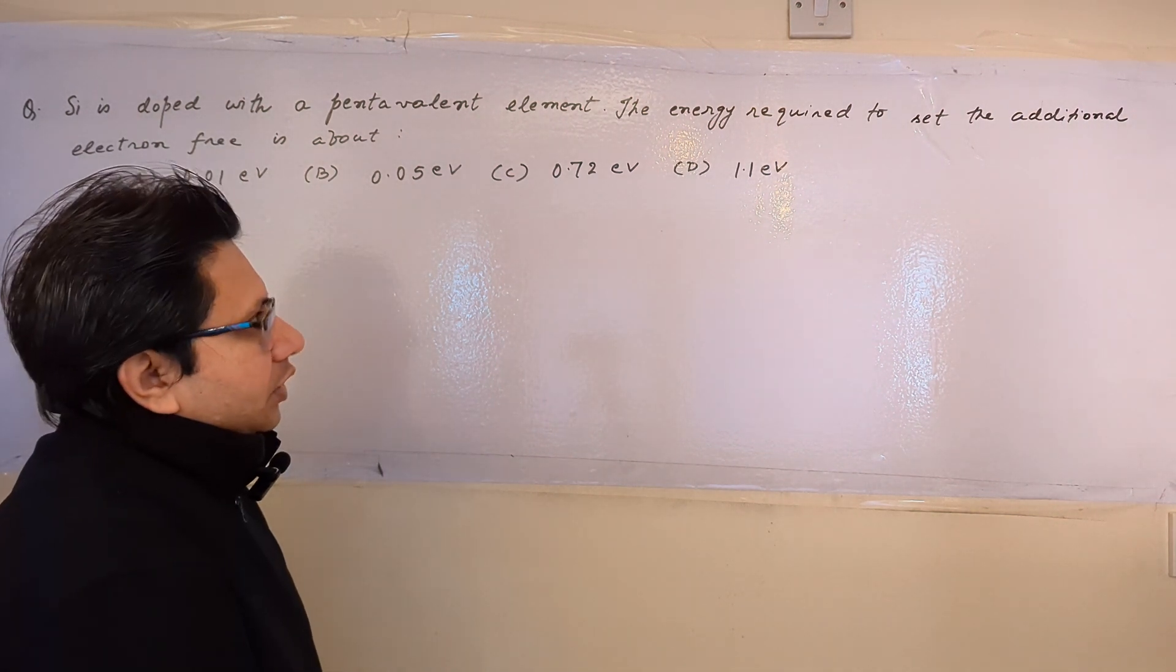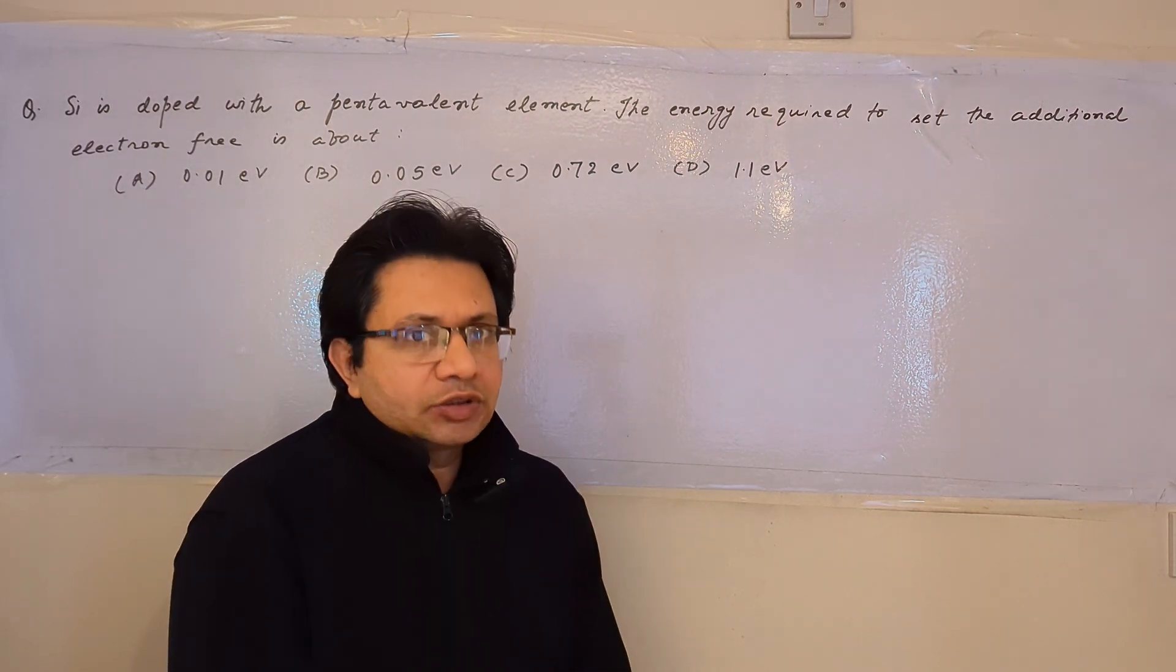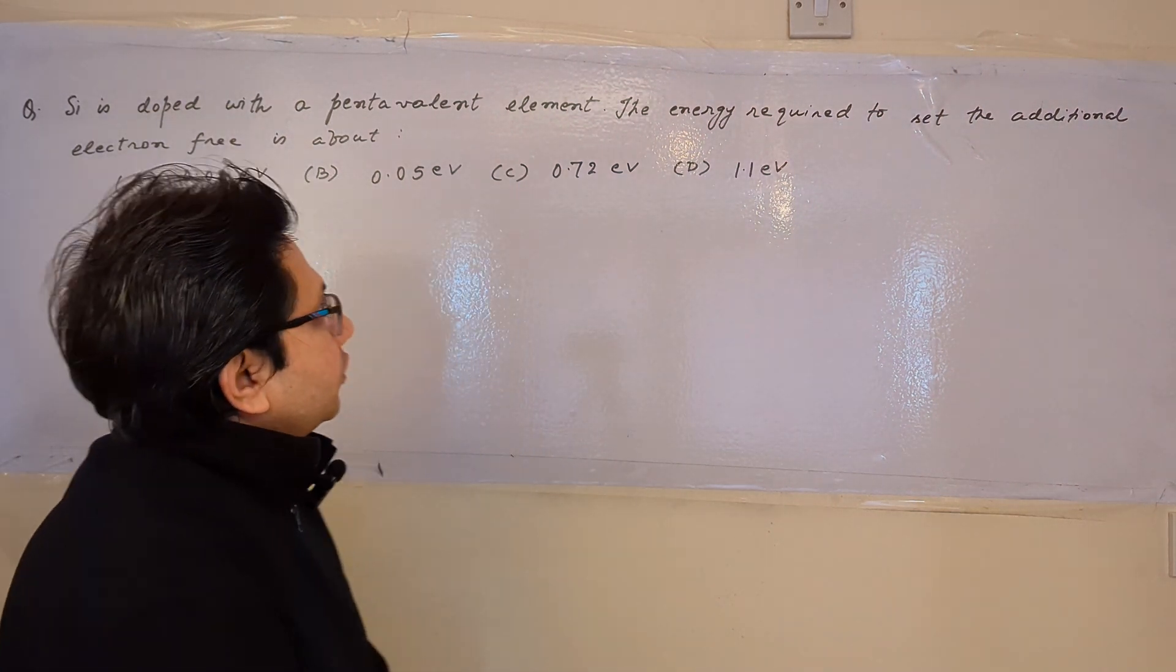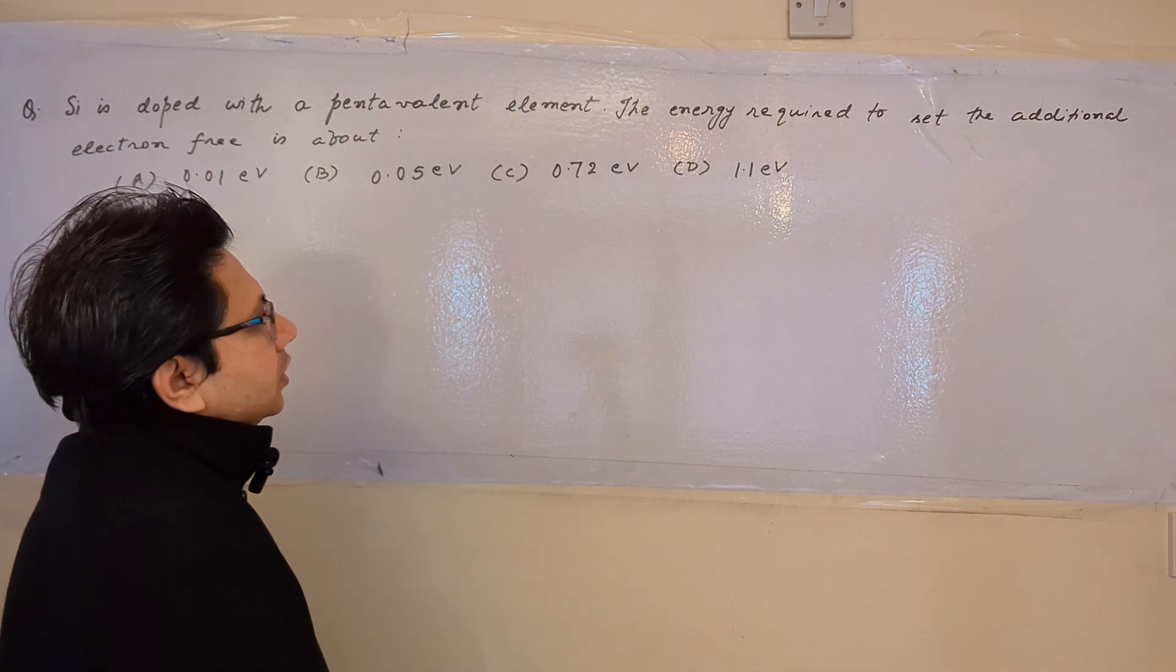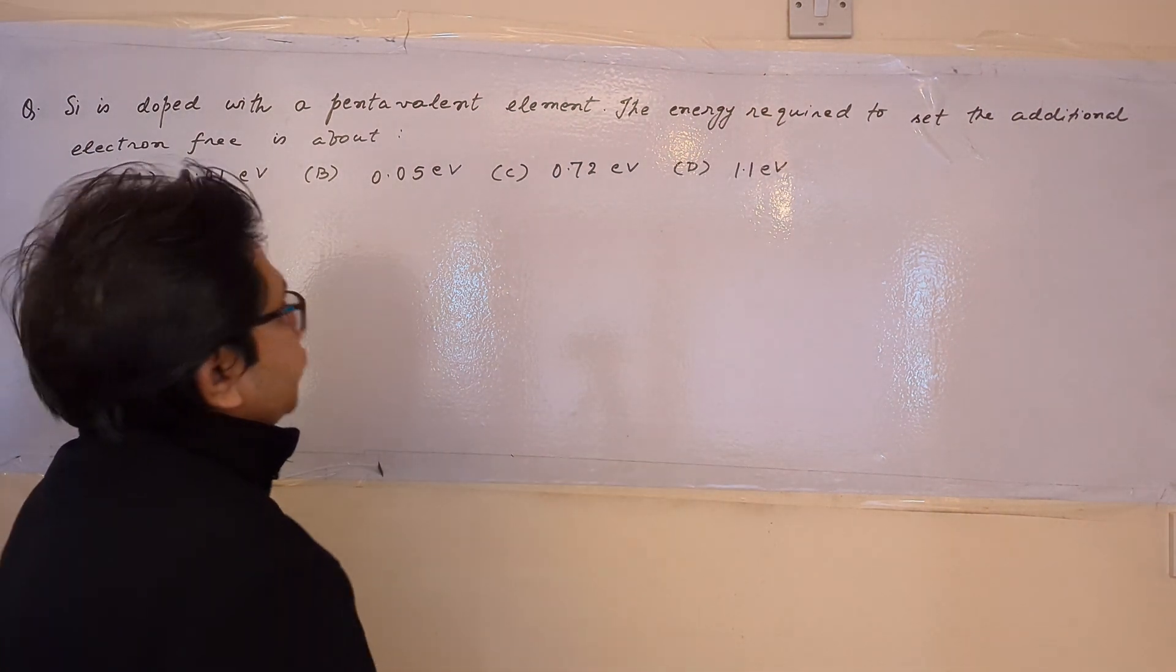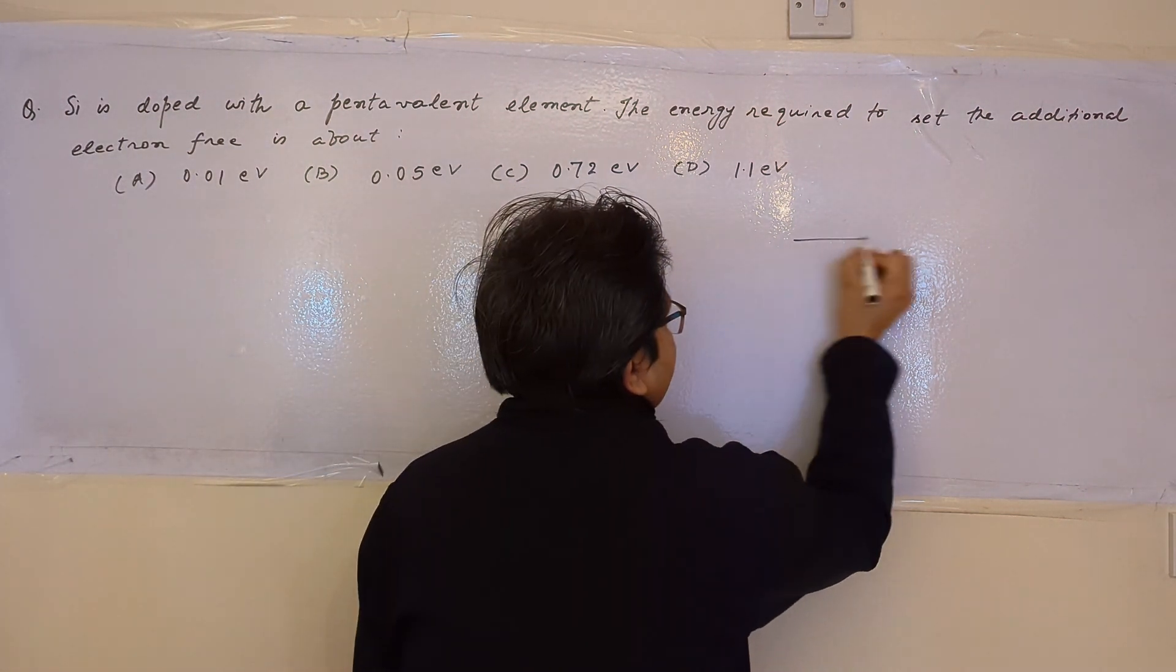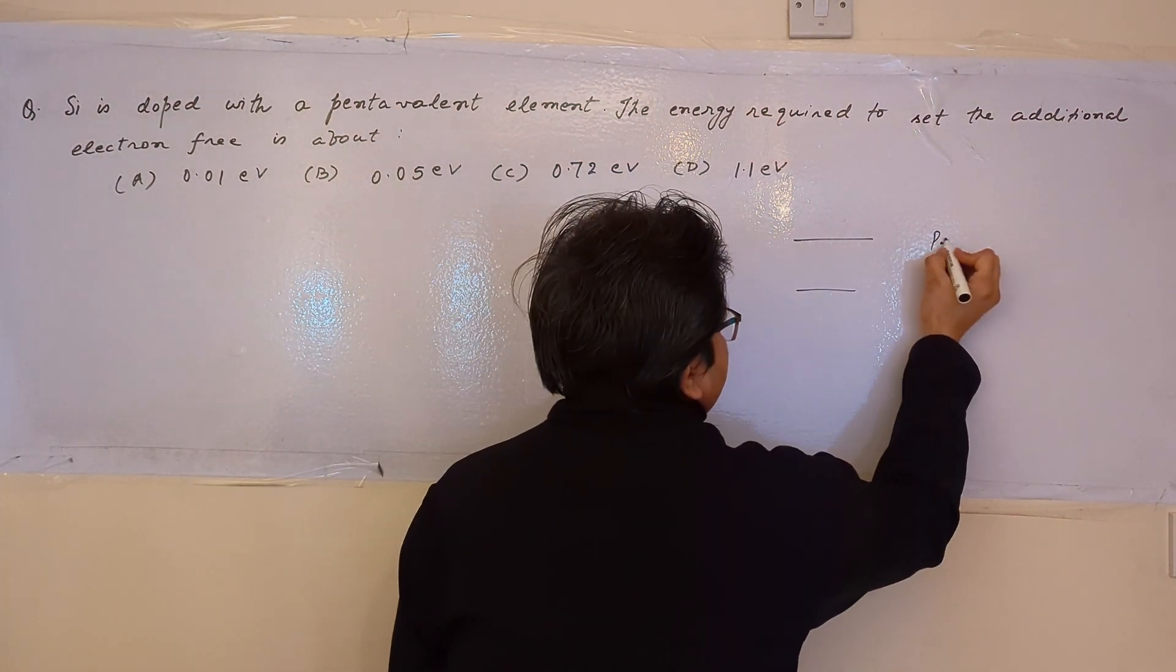The problem is based upon the topic of semiconductor electronics. In particular, we have to write down the energy requirement so that the additional electron is free. The reference is about the pentavalent impurity.